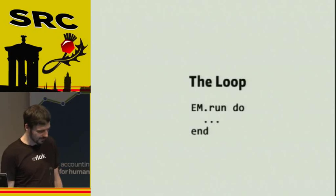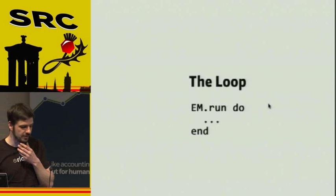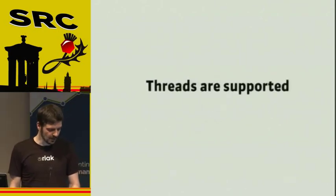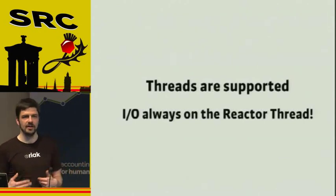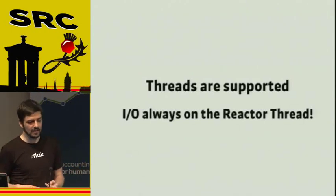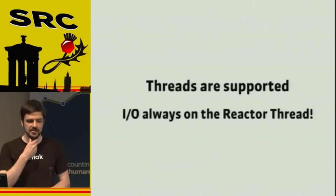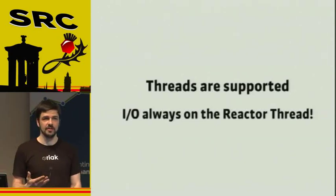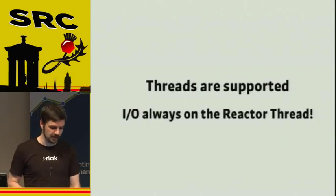This is the event loop. It's basically not more than calling EM.run and giving it a block. Whatever runs in that block will run forever until you tell it to explicitly stop or until you kill your program. You can use threads in EventMachine, but if you're doing IO — sending or receiving data — it always has to be on the reactor thread. We've seen some odd things happen in production if you don't do that.